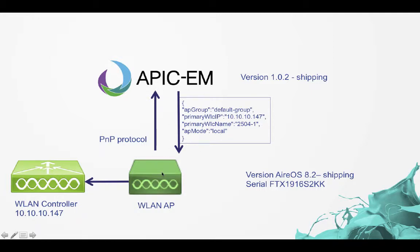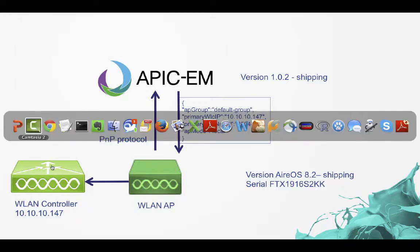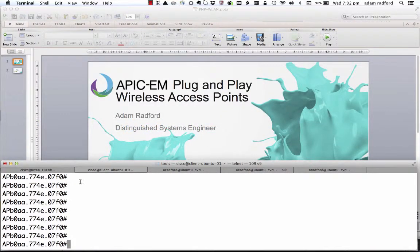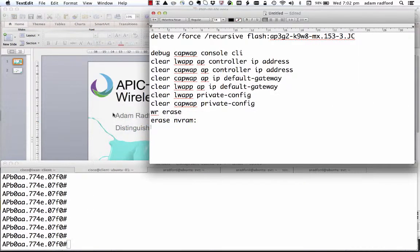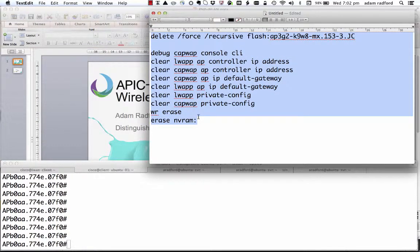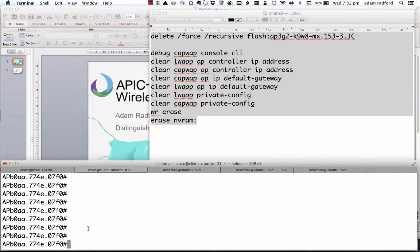Based on that information the wireless LAN access point is then going to communicate to the controller and associate and connect to that wireless LAN controller. Before I get started I'm just going to write-erase, or get rid of the current firmware. So I'm going to go back to a boot image — essentially I'm going to delete the main image on the access point and clear out all of the configuration.